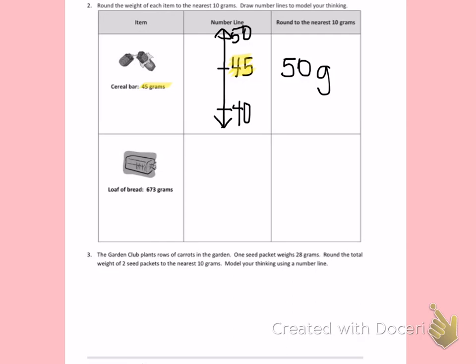Next, I have a loaf of bread that weighs 673 grams. Again, I'm going to make my number line and think about the 10s 673 fits between. 673 fits between 670 and 680. 673 is about here on the number line. 673 has not passed the halfway number, so I am going to round down to 670 grams.